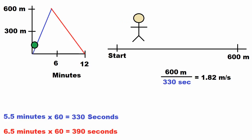So now for the first part of the walk, we're going to take 600 meters over 330 seconds, and this equals 1.82 meters per second.